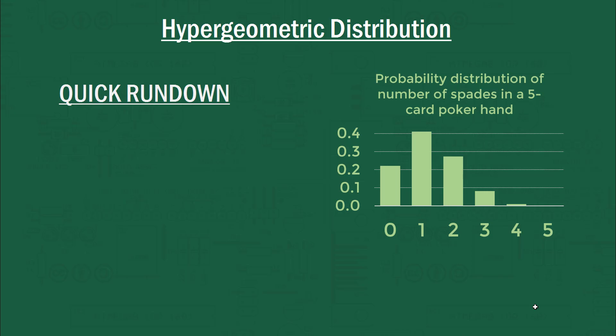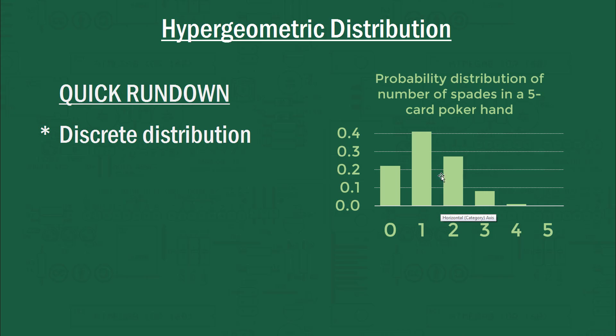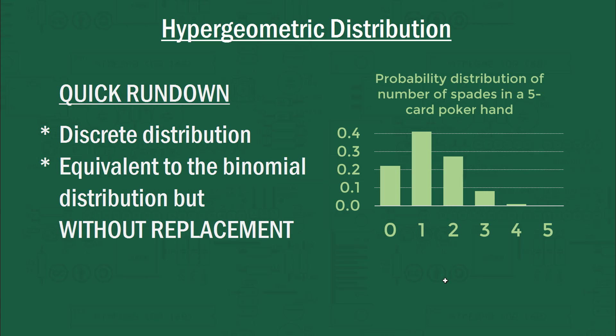For our quick rundown, the first thing we can note is that it's a discrete distribution, much like the binomial and Poisson distributions. So you can only get discrete whole number outcomes from your distribution — you can't, for example, get 1.5 spades in your poker hand. And it's equivalent to the binomial distribution, but without replacement.